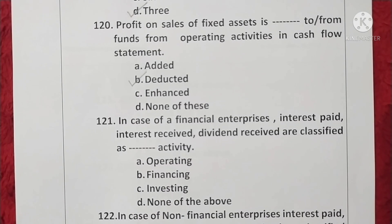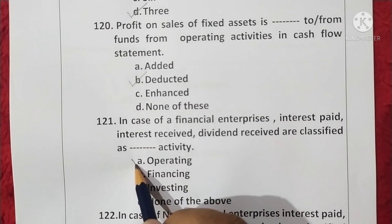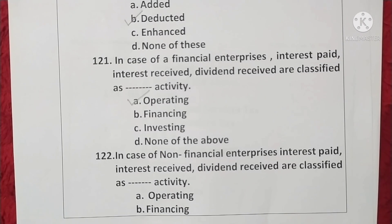Question 121. In the case of financial enterprises, interest paid, interest received, and dividend received are classified as operating activities. Option A is correct. Question 122. In the case of non-financial enterprises, interest paid, interest received, and dividend paid are classified as financing activities. Option B is correct.